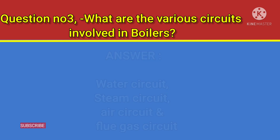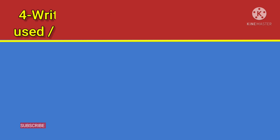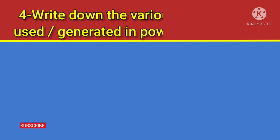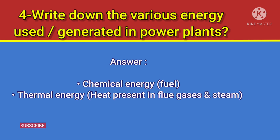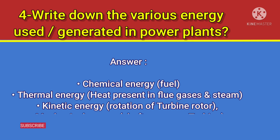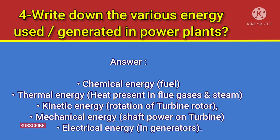Question number 4: Write down the various energies used and generated in power plants? Answer: Chemical energy (fuel), thermal energy (heat present in flue gases and steam), kinetic energy (rotation of turbine rotor), mechanical energy (shaft power on turbine), and electrical energy (in generators).